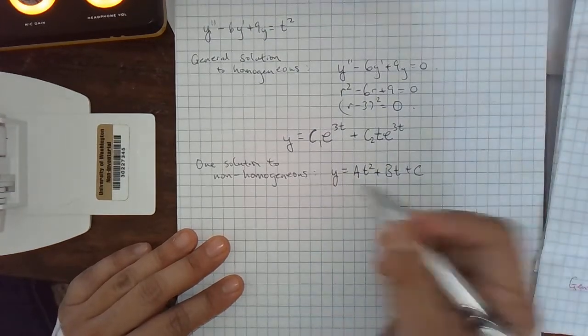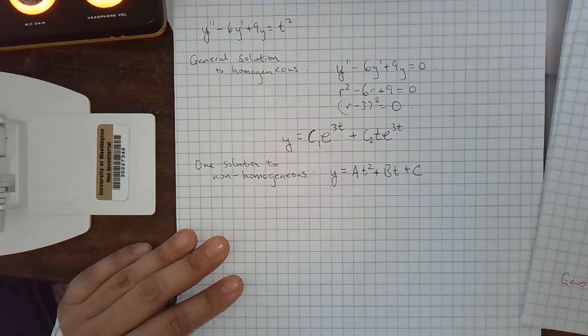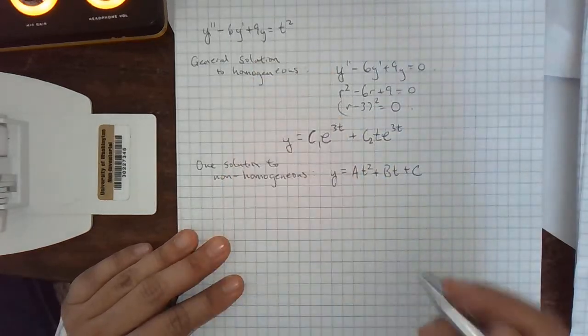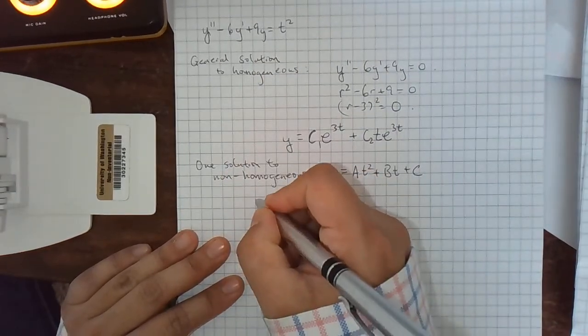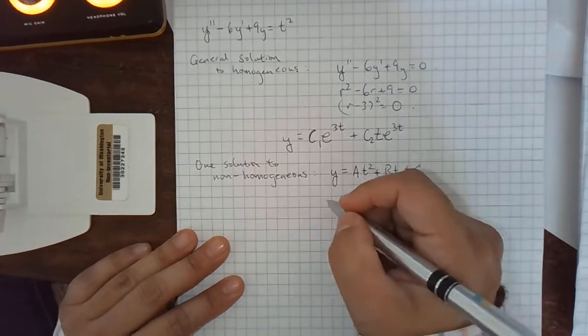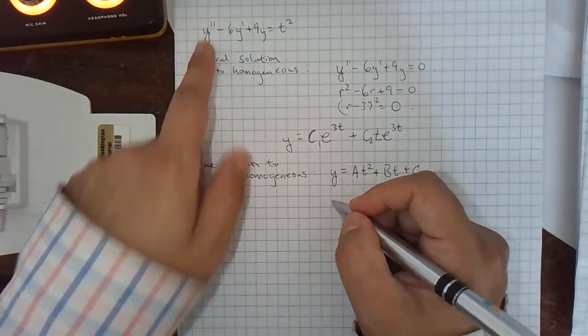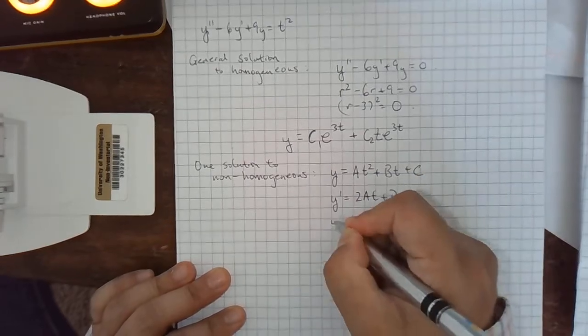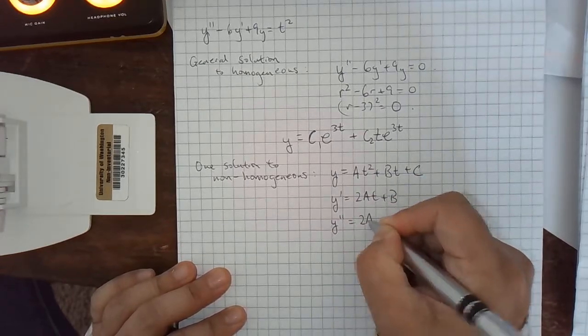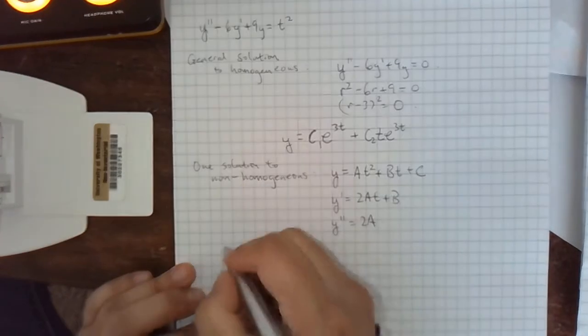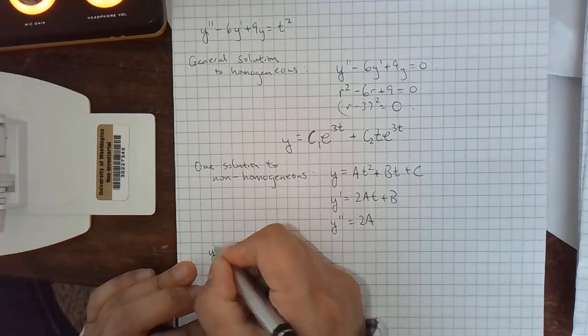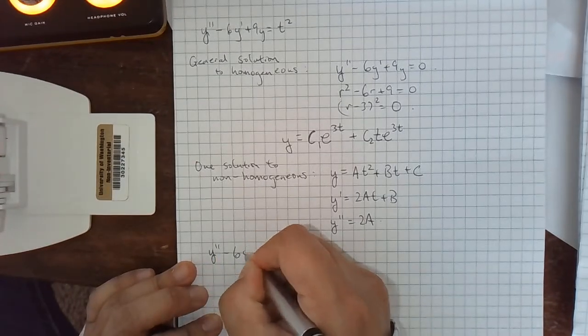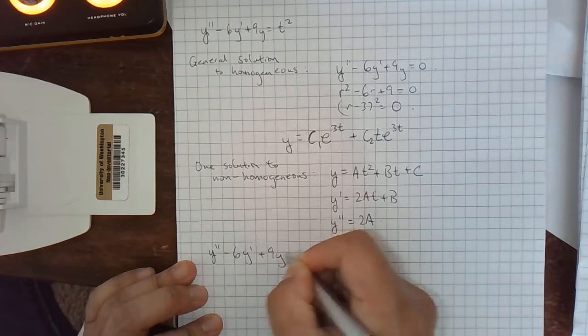And then I'm going to plug it in, and I'm actually going to be able to solve for all of a, b, and c, even though I only have one equation, because we'll see what happens. We'll be able to compare three coefficients. So let's take some derivatives so we can plug it in. So y prime is 2a t plus b. y double prime is 2a. And then plugging that all into there, we get, let's just write this down, y double prime minus 6y prime plus 9y. What does that give us?